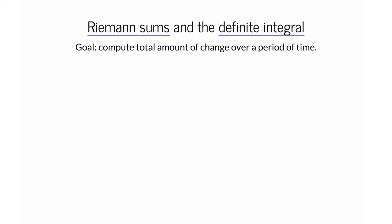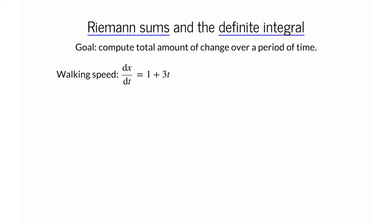Imagine that you took a two-hour walk. At the beginning you were walking slowly, at one kilometer per hour. If x is your position in kilometers, then at first your position was changing at the rate dx/dt equals one. But you didn't stay at that speed — instead you accelerated, increasing your speed by three kilometers per hour every hour.